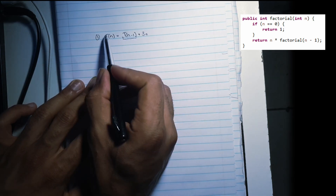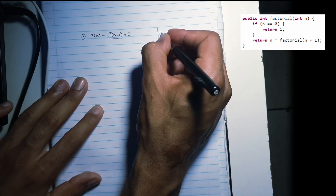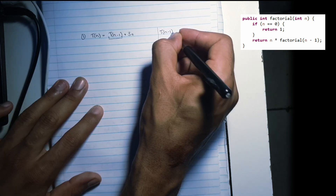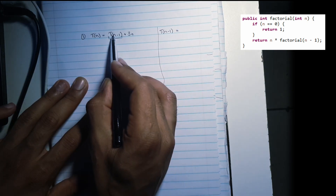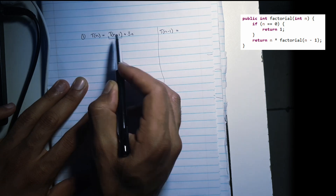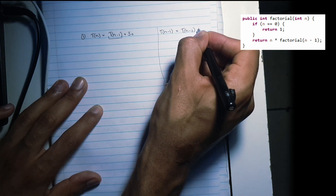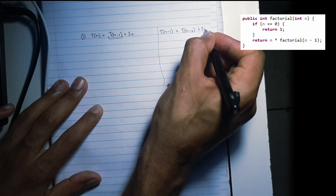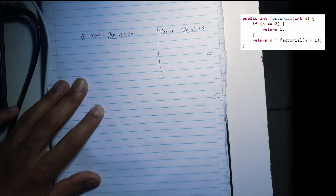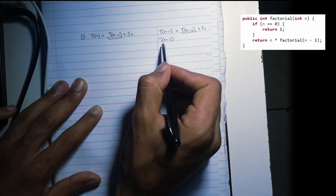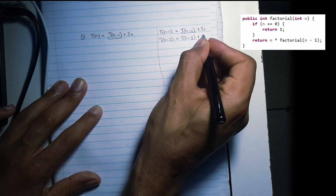We're going to substitute N minus one in this formula to see what we get. T of N minus one — so replace N with N minus one — and you're going to find that we have T of N minus two plus 3C. Now what's T of N minus two? T of N minus three plus 3C.